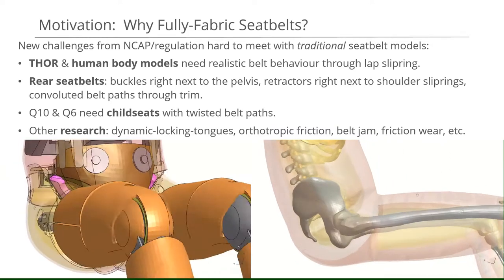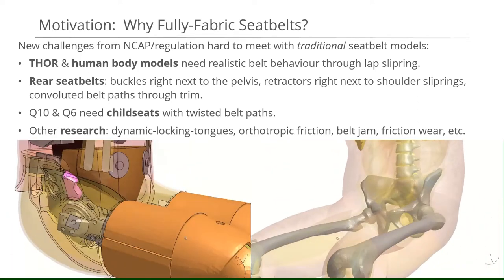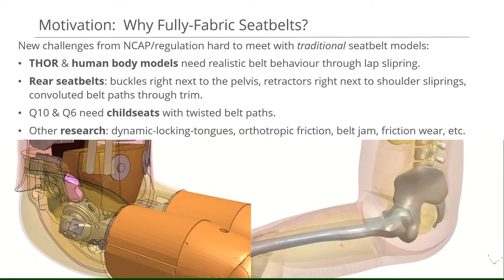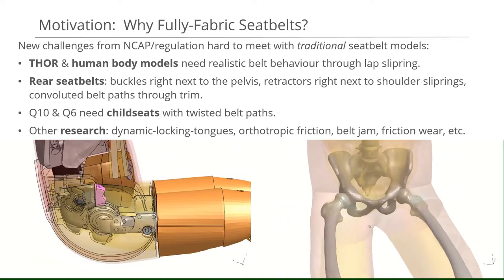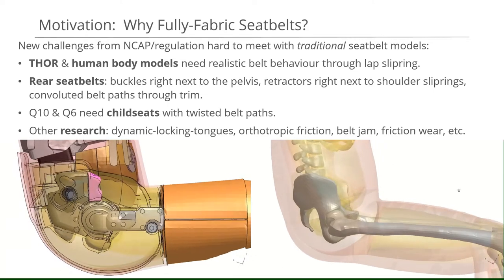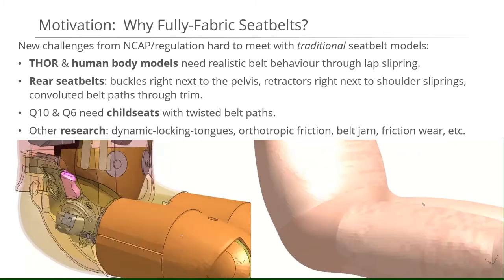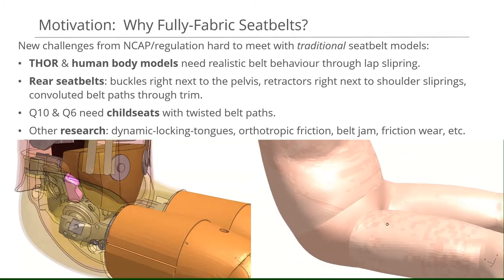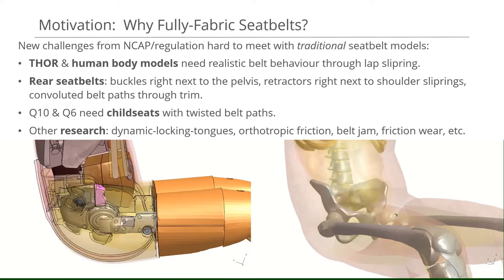There's increasing demand to better simulate the kinematic behavior and injury of dummies like Thor, shown on the left, and human body models shown on the right. Thor has load cells to measure injury directly under the lap part of the seatbelt right next to the slip ring.